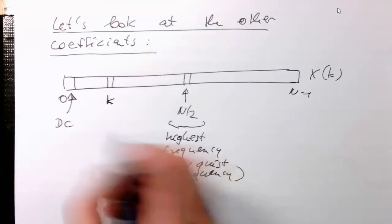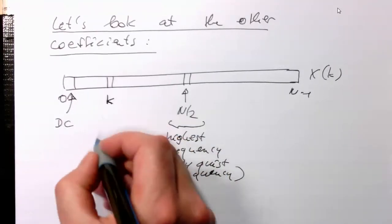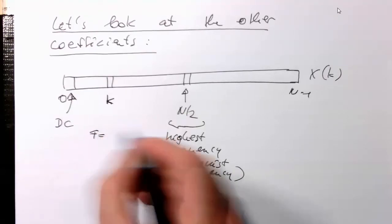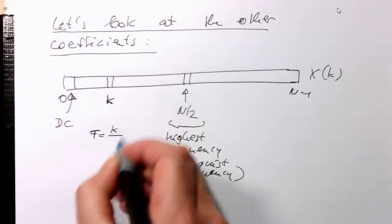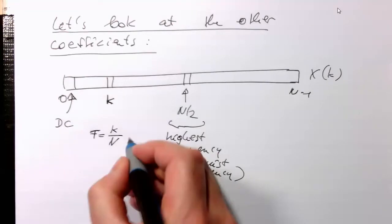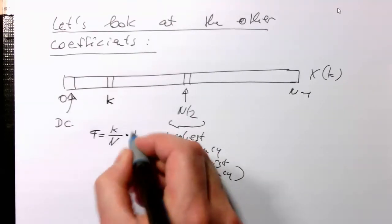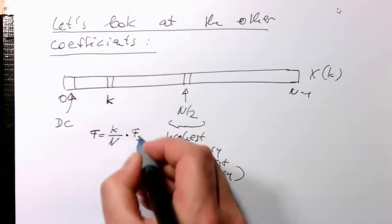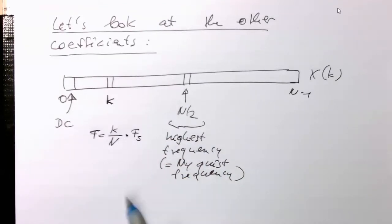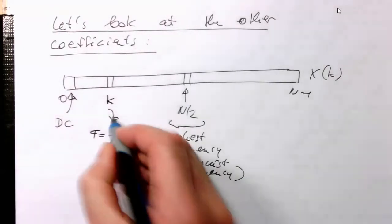So our frequency, what we are getting out here, k divided by n. This would be normalized frequency multiplied by fs. So this would give us our frequency here at this point.